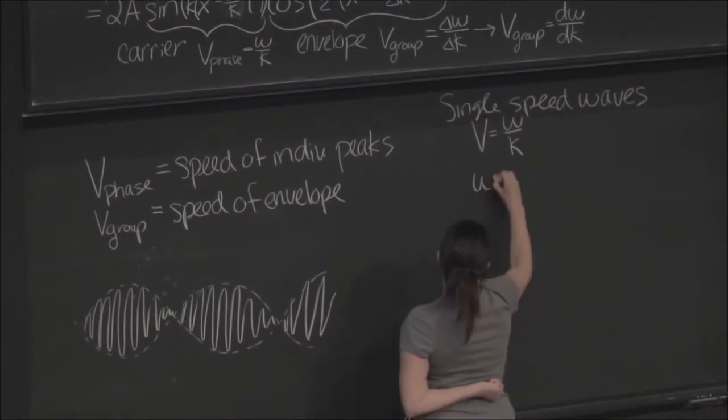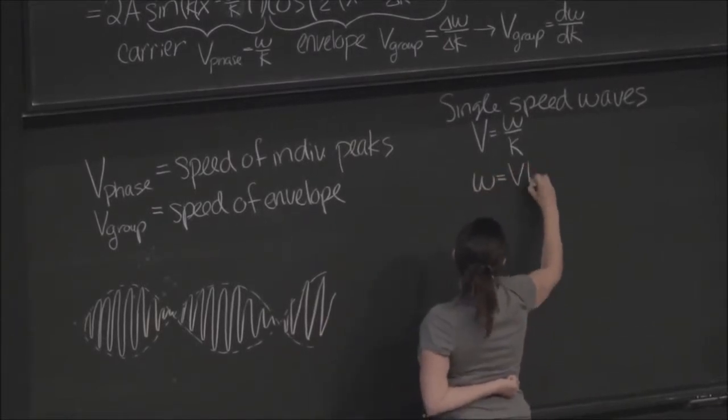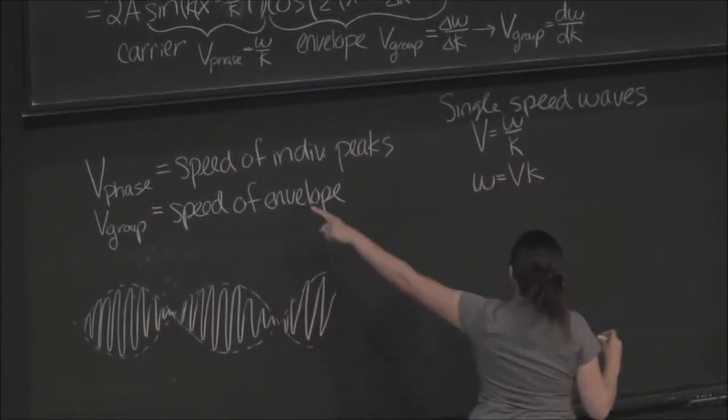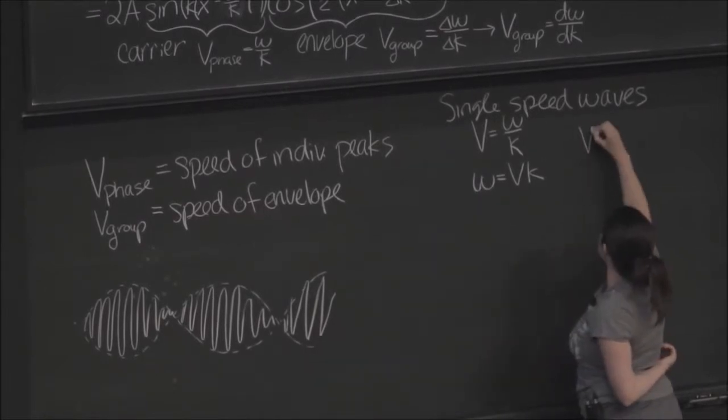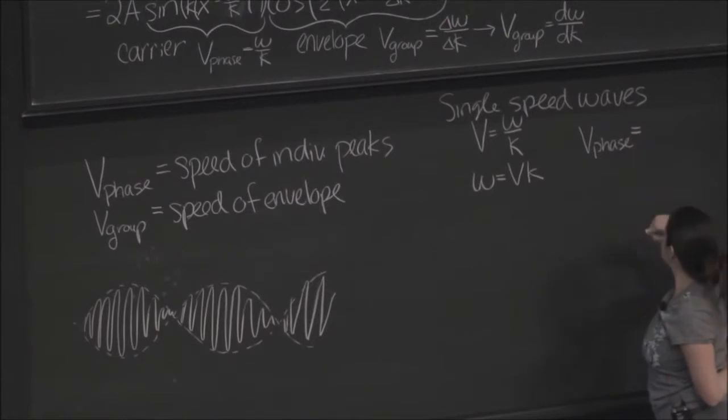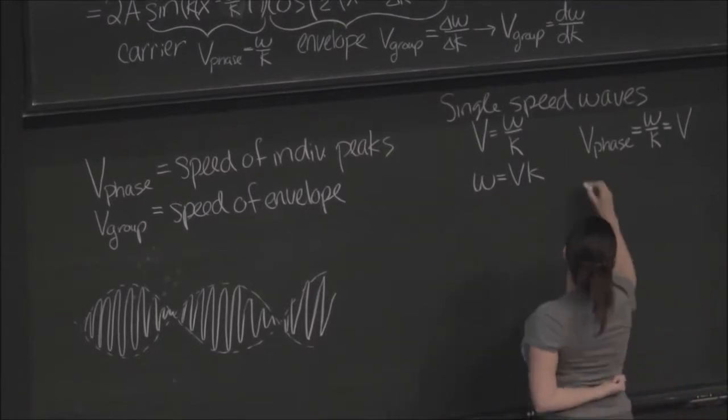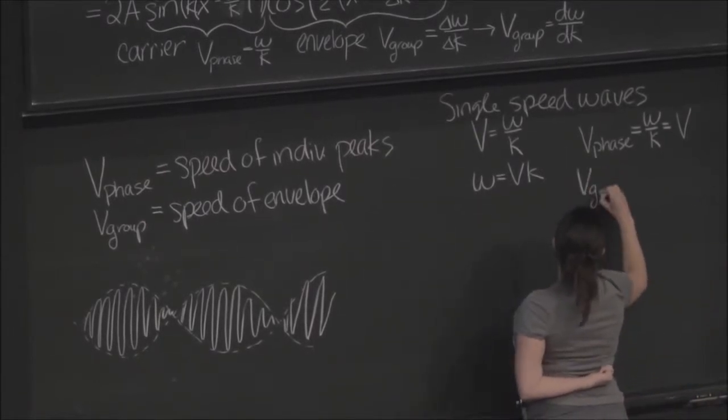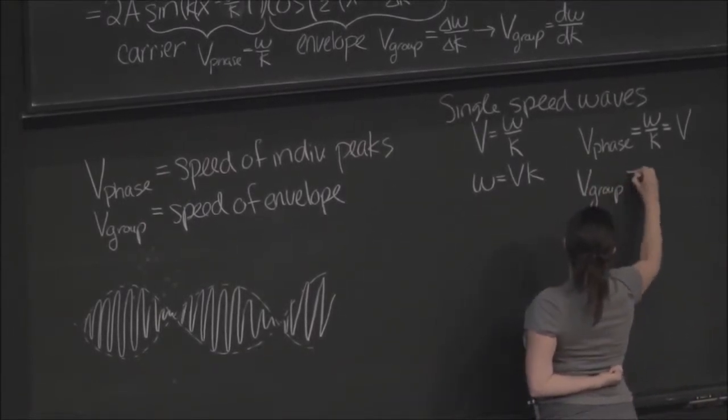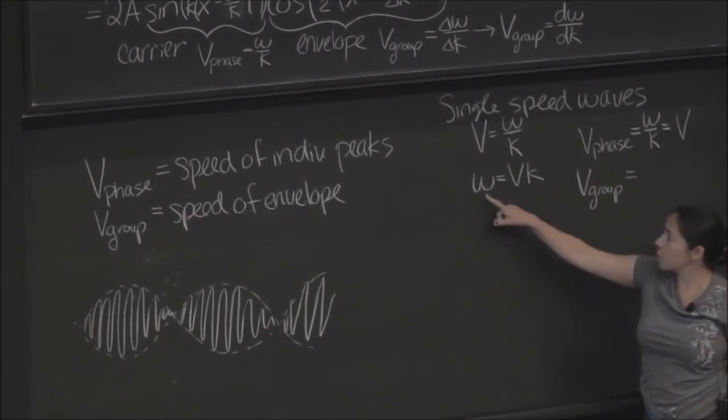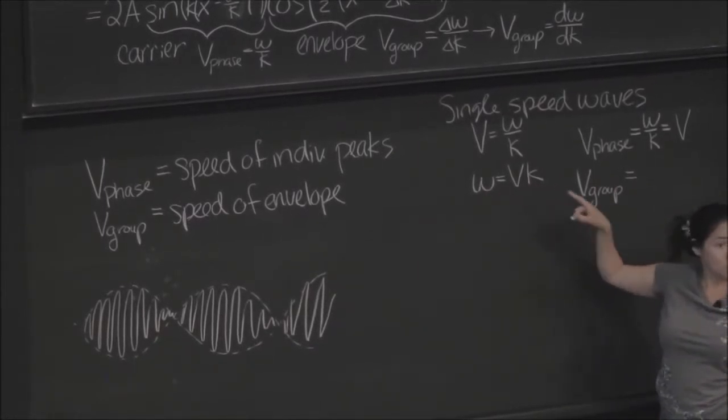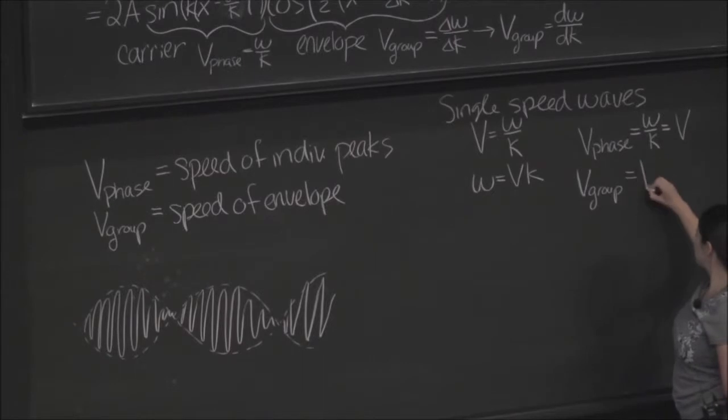So we can write that omega equals v times k. So in that case, we would have v phase equals omega over k, which equals just v. No big surprise. And we would have v group. Well, if we take the derivative d omega dk, what do we get? v. Not very exciting.